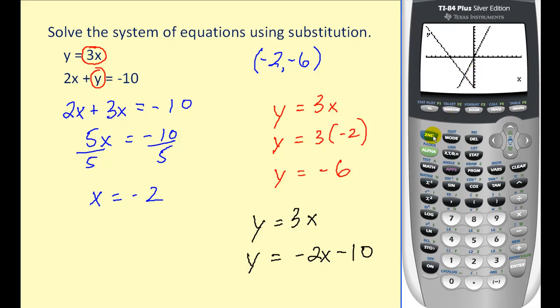There's our point of intersection. If we hit second trace, brings up the calculation menu, option five, then hit enter three times. We can see that our solution is correct.